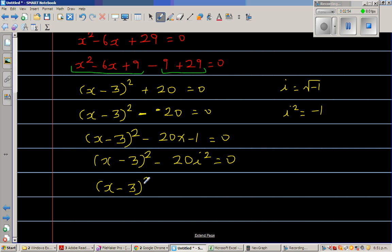Can I write this as √20 times i? So I'm going to write √20 i the whole squared. Can I write this as (x - 3)² minus (√20 i)²?